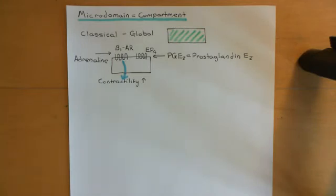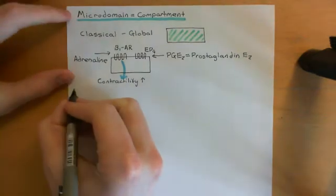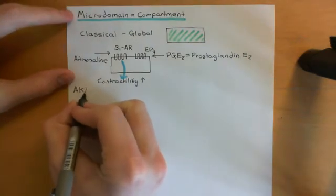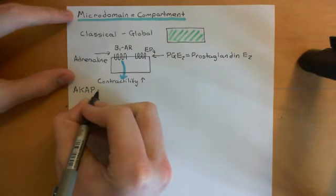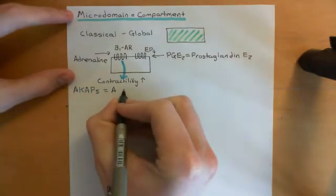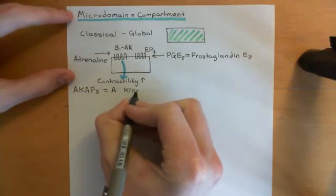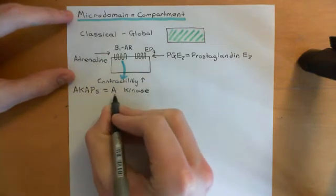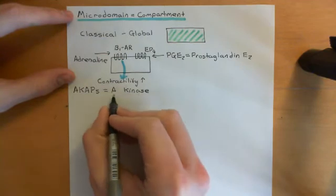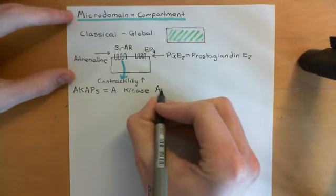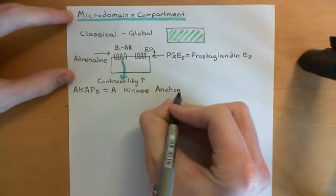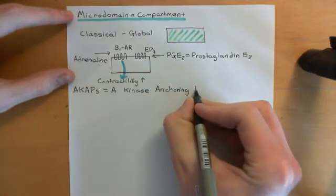Most rational people agree that microdomains probably are the case, but it isn't a hard solid fact yet. A-kinase anchoring proteins are abbreviated as AKAPs. This stands for A-kinase — which is another name for protein kinase A; protein kinase A, cyclic AMP-dependent protein kinase, or A-kinase all mean the same thing — and then anchoring proteins.